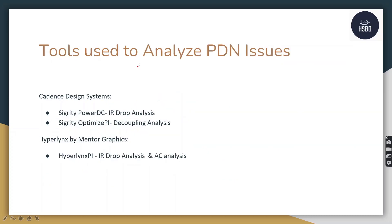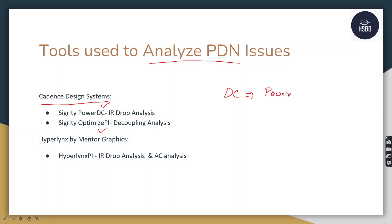Let us see the tools used to analyze the power delivery network. Cadence design system comes with two tools: one is Sigrity PowerDC, and the other is Sigrity Optimized PI. If you want to do DC analysis, you use the PowerDC tool, and for AC analysis, you use Sigrity Optimized PI.